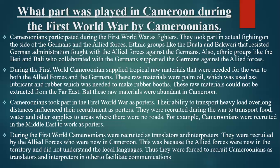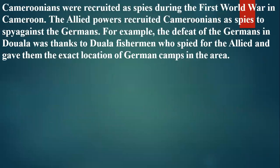The Allied forces recruited Cameroonians as translators and interpreters because they were new to the territory and did not understand the local languages. Thus, they were forced to recruit Cameroonians to facilitate communication. Cameroonians were also recruited as spies — the Allied powers used them to spy against the Germans. For example, the defeat of the Germans in Douala was thanks to Douala fishermen who spied for the Allies and gave them the exact location of German camps in the area.